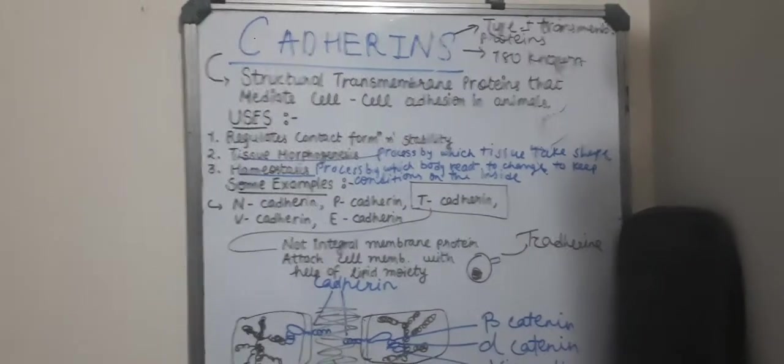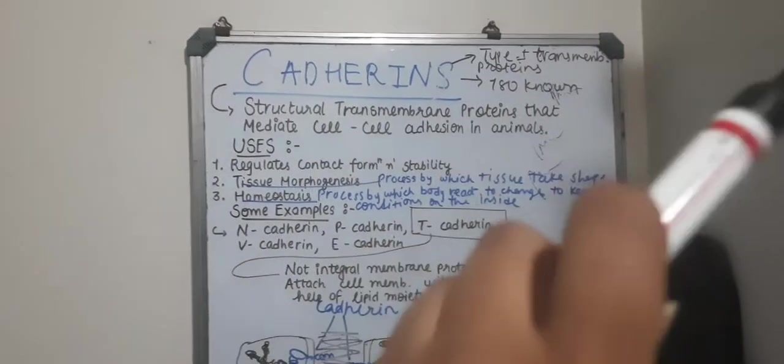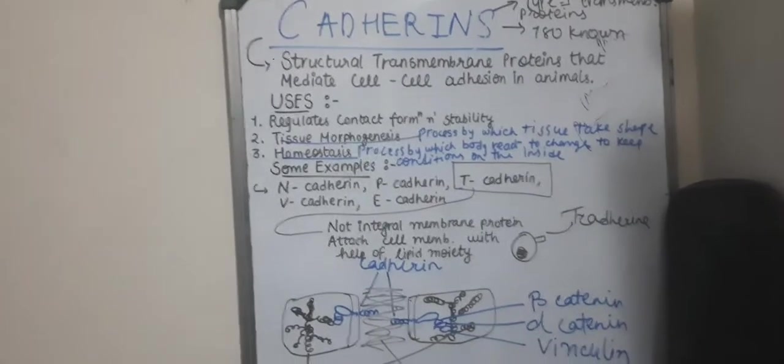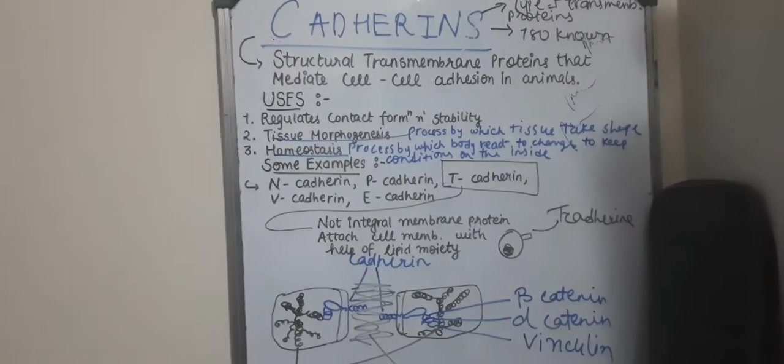Now till date there are 180 types of variety of cadherins known to us. Now first of all we will learn the definition of the cadherins.